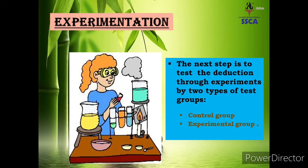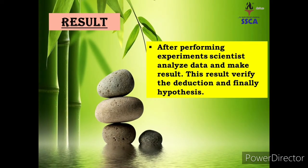After deduction, next step is experimentation. In this stage biologists perform experimental study — means practical work — to verify the deduction and finally the hypothesis. इसके अंदर scientists जो भी अपनी logical thinking या prediction दी थी उसको practically proof करते हैं। इसके लिए वो test perform करते हैं — एक control group और एक experimental group — ताकि वो अपने results को match कर सकें।